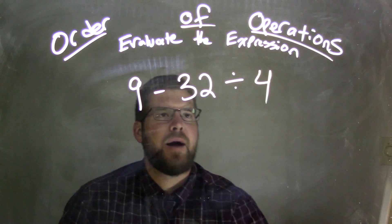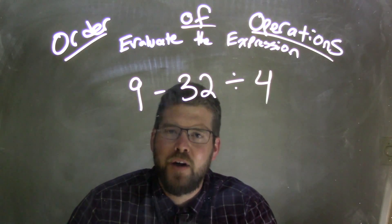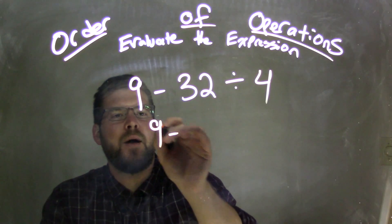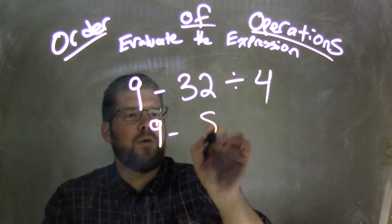So we take that 32 divided by 4. What's 32 divided by 4? 8, right? So the 9 comes down minus 32 divided by 4 is 8.